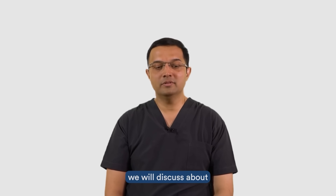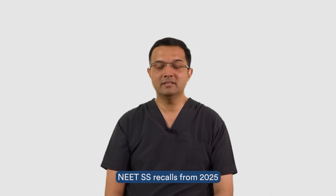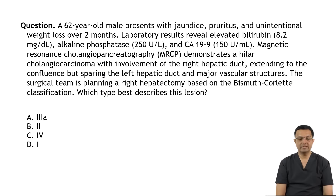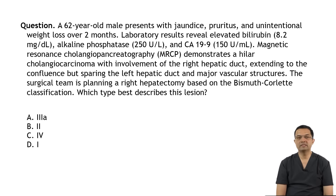Hello doctors, welcome to Digi. In this module we will discuss about recent NEET SS recalls from 2025. A 62-year-old male presents with jaundice, pruritus, and unintentional weight loss over two months. Laboratory results reveal elevated bilirubin at 8.2 mg/dL and elevated alkaline phosphatase at 250 units per liter.